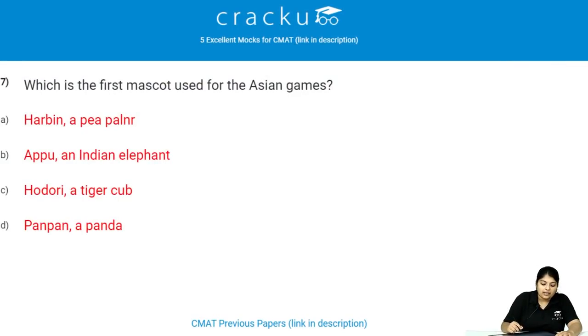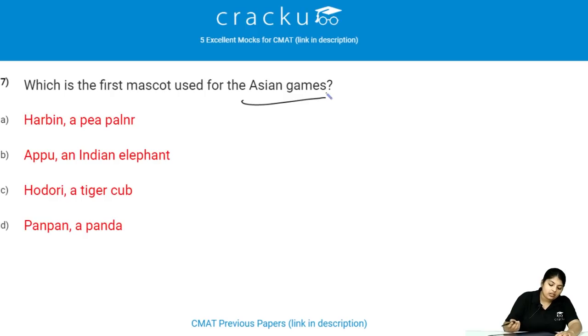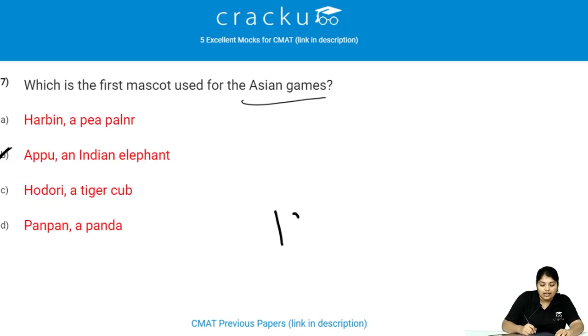What is the first mascot used for the Asian Games? The first ever mascot used for the Asian Games is Appu, an Indian elephant. It was used in the year 1982.